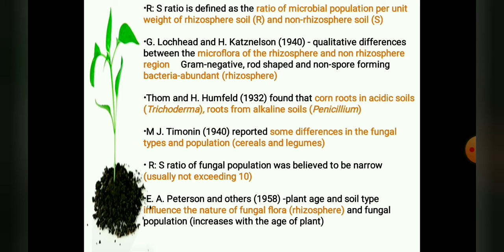In 1940, G. Lowhead and H. Cards Nelson examined in detail the qualitative differences between the microflora of the rhizosphere and the microflora of the non-rhizosphere region, and reported that gram-negative, rod-shaped, non-spore-forming bacteria are more abundant in the rhizosphere than in the non-rhizosphere soil.